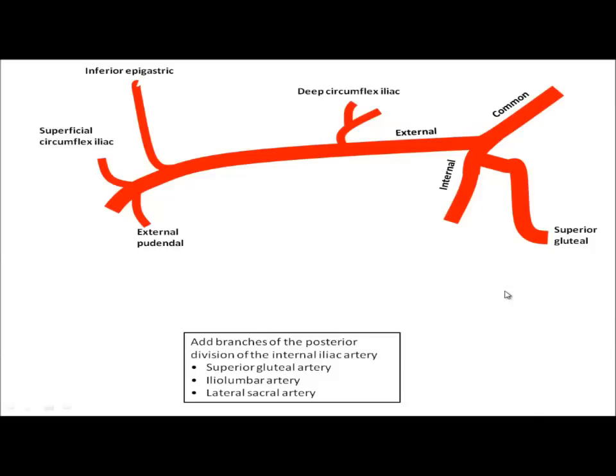And ascending from this branch, we've got the iliolumbar artery, which is taking care of the iliac bone, lumbar vertebra, and other structures and muscles like quadratus lumborum that are located nearby. And descending from this branch, we've got the lateral sacral artery, taking care of the lateral aspect of the sacrum and the little nerves that are coming out of the anterior sacral foramina.